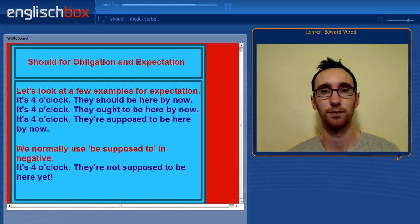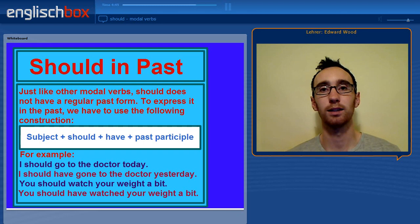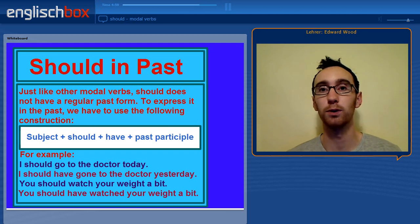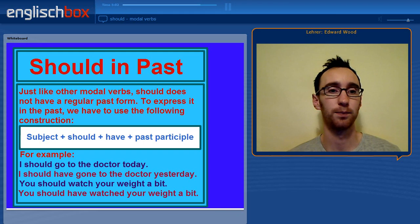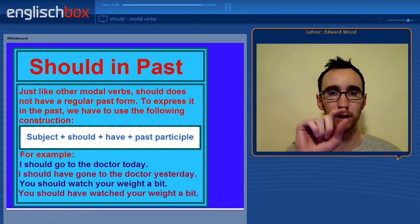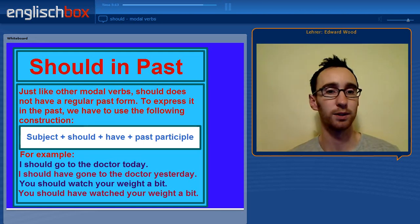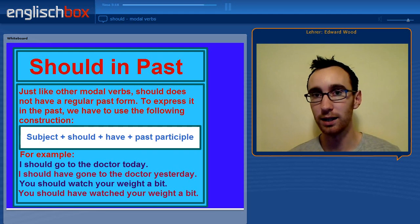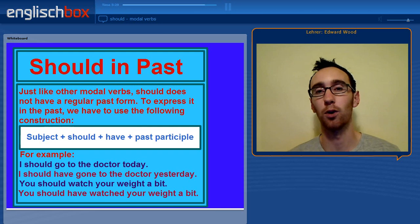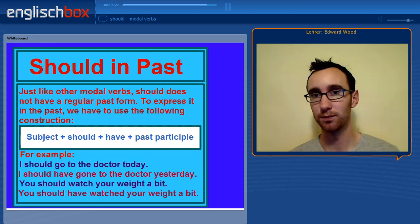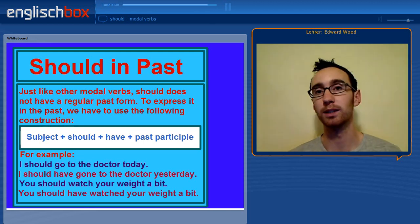Finally, should in the past. Just like other modal verbs we have looked at, including can and must, should has to take the present perfect form, as modal verbs do not have a regular past form. The construction is: subject + should + have + past participle. For example, in the present: 'I should go to the doctor today'; in the past: 'I should have gone to the doctor yesterday, but I didn't.' In the present: 'You should watch your weight a bit'; in the past: 'You should have watched your weight a bit.'